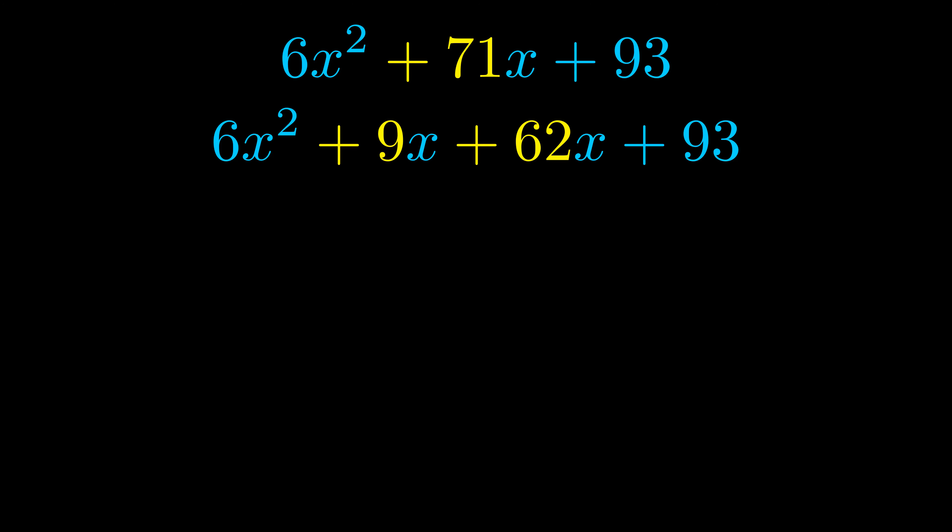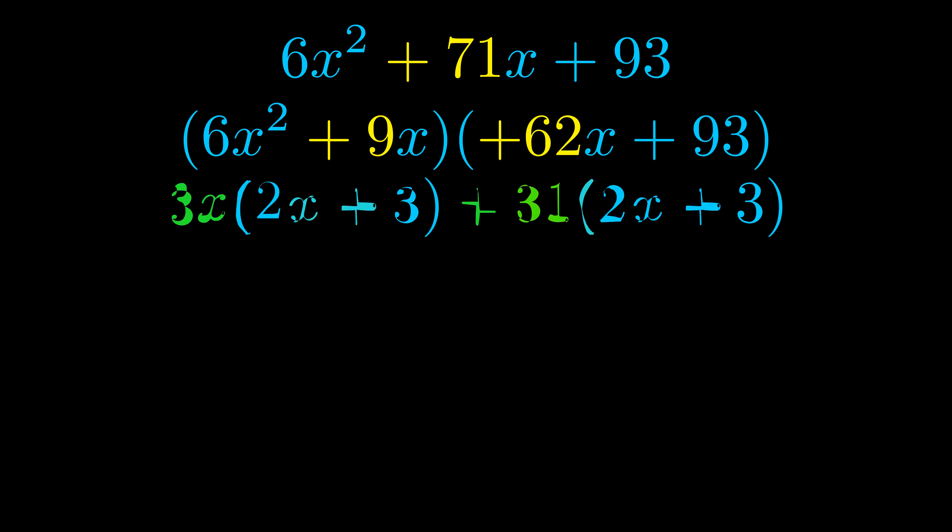Once we've done this, we go ahead and put parentheses around the first term and the last term, and we do that so that we can take the greatest common factor out of both terms. We can see the greatest common factor is now outside in green.